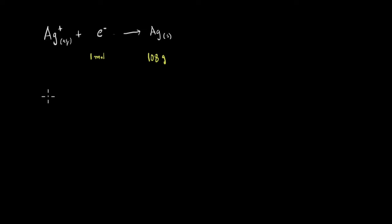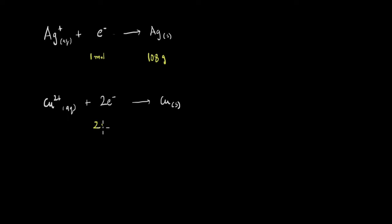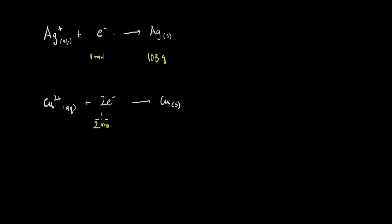What if the metal deposited is copper? In the case of copper, the copper ion gains 2 electrons to get deposited at the electrode. Because of this factor of 2, for every 2 moles of electrons we get 1 mole of copper. Since the molar mass of copper is 64 g/mol, 2 moles of electrons give 64 grams of copper deposited at the electrode.